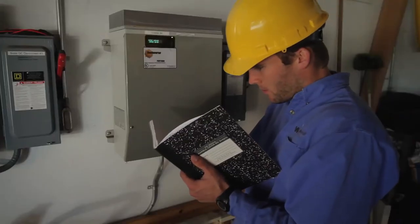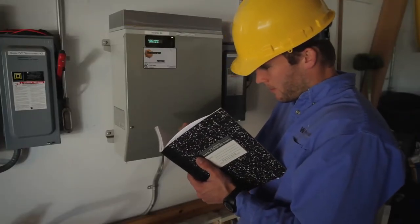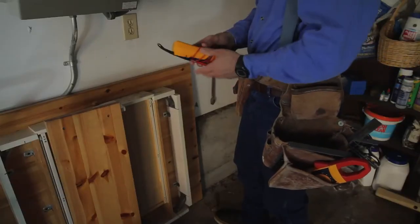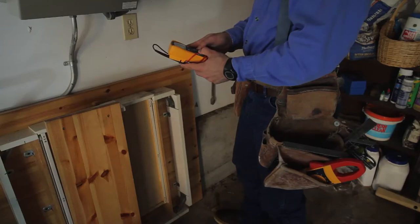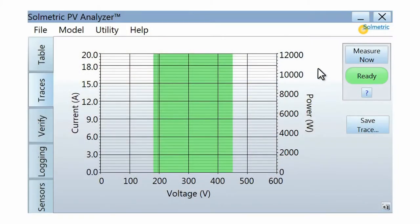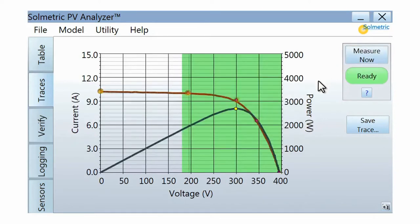The most basic method is to compare the power output of the inverter readout with the design power output specification. Using a multimeter and a clamp meter to measure key string parameters is a common approach. The most comprehensive method of performance verification is to trace the IV curve of each PV string and to compare the curve with a detailed performance model.